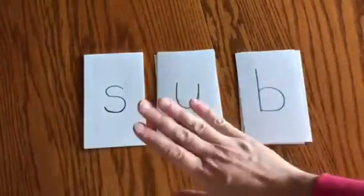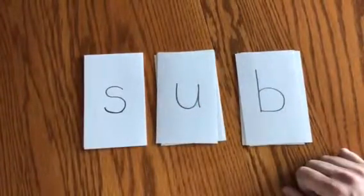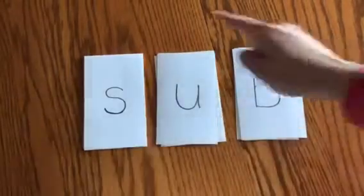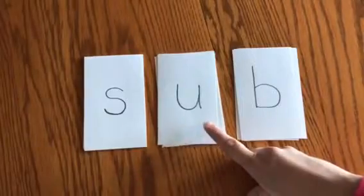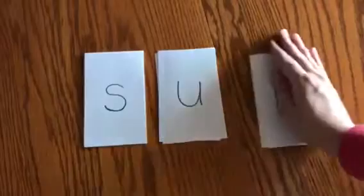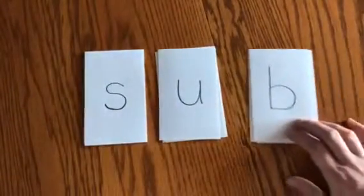So you want to set up your cards like this: initial sounds, medial sounds, and final sounds. We want to make sure that we always have a consonant at the end here so that we have a closed syllable, which means that our middle sound, our vowel, is always going to be short. If I took this away, this goes from 'sub' to 'sue,' and I don't want that. I only want to work with short sounds right now.